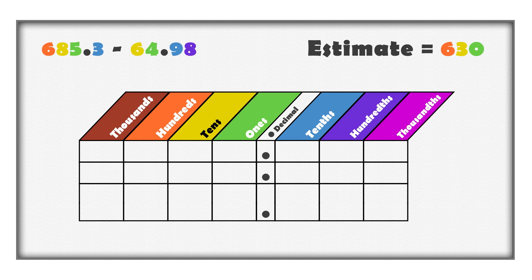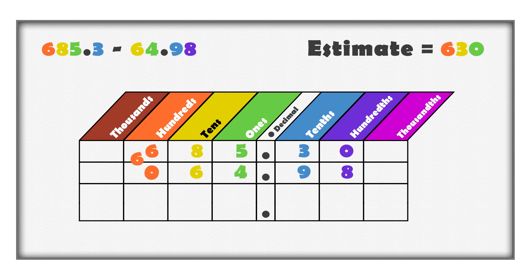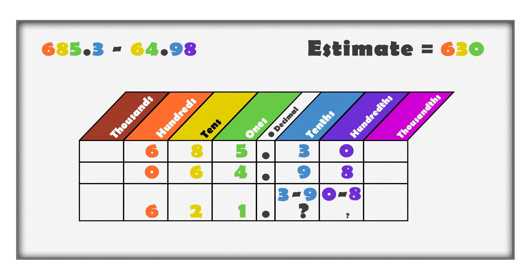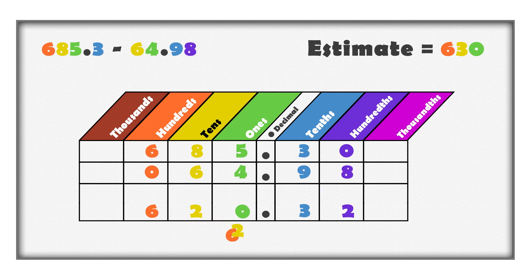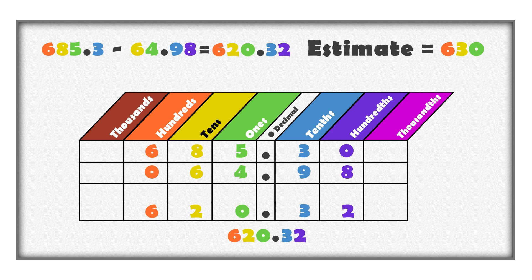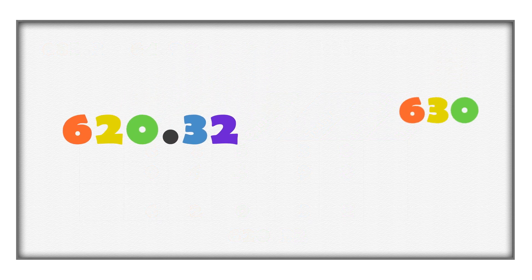Now we can subtract the numbers. Fill the digits into a place value chart, fill zeros into columns, and subtract digits of the same place value. We do not have enough tenths and hundredths, so we can borrow. Change 1 one to 10 tenths — we get 4 tenths. And change 1 tenth to 10 hundredths — we get 2 hundredths. The answer is 620 and 32 hundredths. The estimate is close to the difference, so we can be confident about the answer.